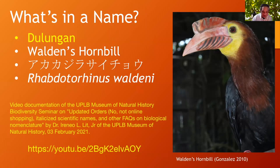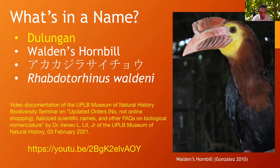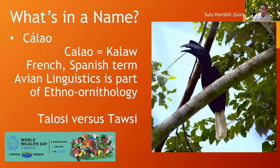Going back to the name Dulungan. If you want to understand scientific names further, there is a webinar at the UPLB Museum of Natural History YouTube channel on biological nomenclature by Dr. Rene Lit. Going back to the name Kalaw — it's actually spelled C-A-L-A-O in Spanish and French, a term for hornbill, and we changed the spelling to the Filipino K-A-L-A-W. Kalaw is actually a Spanish and French term for hornbill — an adopted name. This is part of what we study in what we call ethno-ornithology.